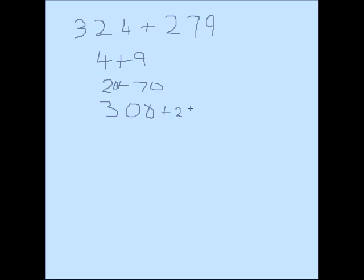Now we can fill in the answers. 4 plus 9 equals 13. 20 plus 70 equals 90. 300 plus 900 equals 500.